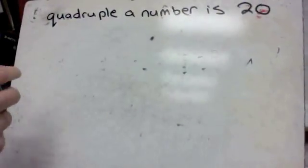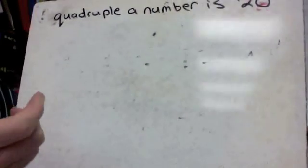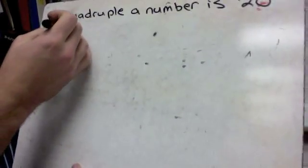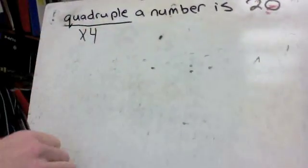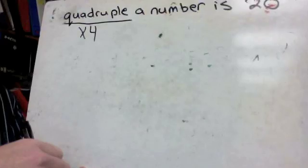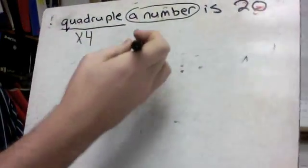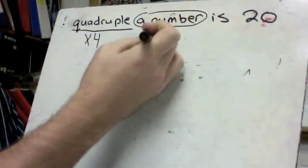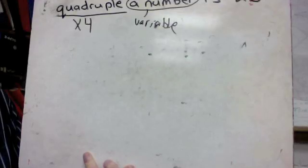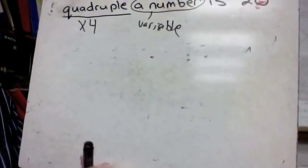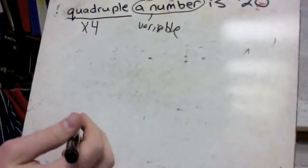So if we read what we have here it just says quadruple a number is 20. First thing we need to do is kind of pick out key words. Quadruple just means four times as much. A number, if you ever see something that says a number, that is going to be the variable. Now you can make up whatever variable it is, a lot of times people will just use X but it really doesn't matter so I could just use X would be fine.